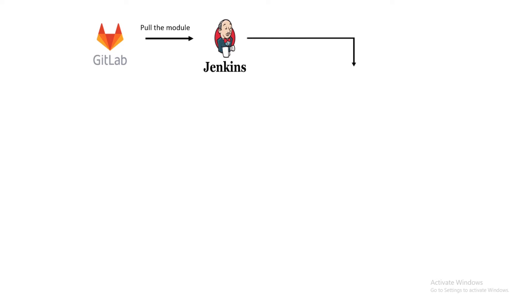In the next stage, Jenkins will transfer the Terraform module to the Terraform server, which has instructions to provision Azure public virtual machine for web server, a private virtual machine for app server, resource group, storage account, network security group, virtual network, subnet, network interface, and MySQL database.